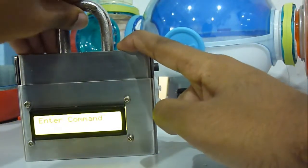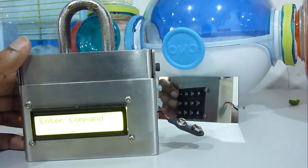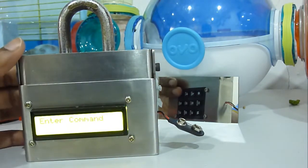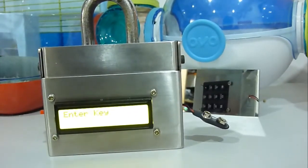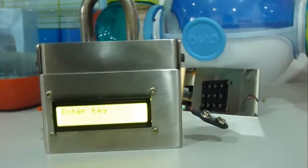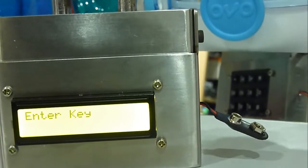So now the padlock is locked. To unlock the padlock I will press number one and it will be asking for password. As you can see here, the display is asking to enter key.